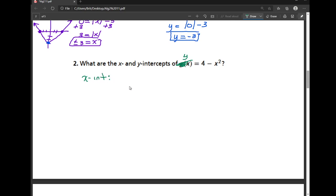So for the x-intercept, I'm going to set y equal to 0. So I get 0 is equal to 4 minus x squared. I don't like having a negative in front of my x, so I'm going to go ahead and add x squared to each side.